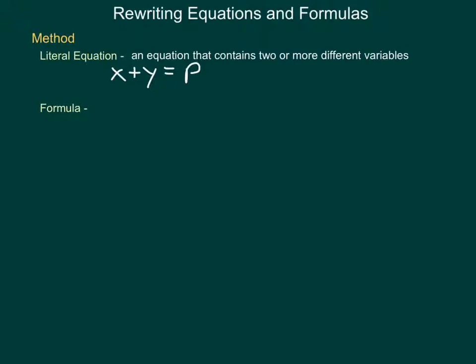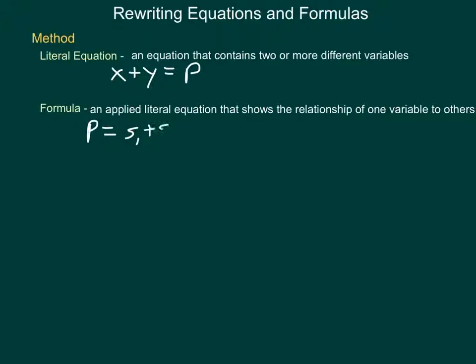While rewriting equations and working with literal equations, a lot of application will come through the use of formulas. A formula, by definition, is an applied literal equation that shows the relationship of one variable to others. For instance, the perimeter of a triangle, p, equals side 1 plus side 2 plus side 3. Each of these sides has a control over that overall perimeter. Later in this lesson we'll look specifically at formulas, plus there will be application for formulas when we move into geometry.